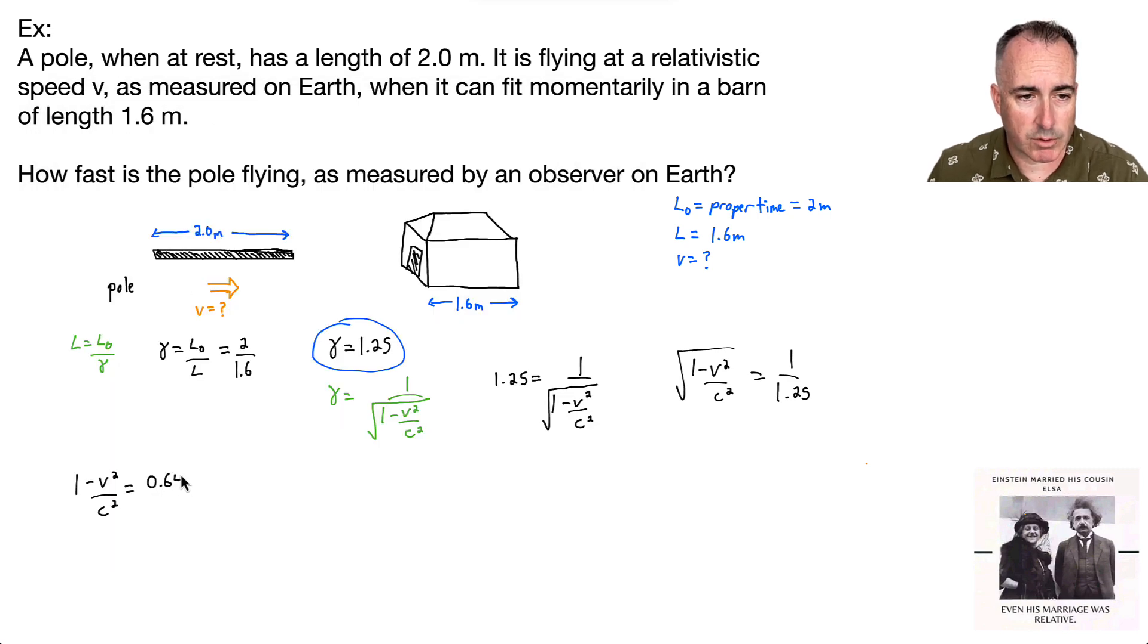Now I can move my minus v squared over c squared to the other side. It's going to be 1 minus 0.64 equals v squared over c squared. That's 0.36 equals v squared over c squared. To get v by itself, I take the square root of both sides. Square root of 0.36 is 0.6, which equals v over c. Therefore, v equals 0.6c. That's my exact answer.